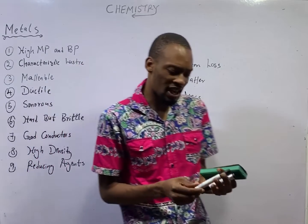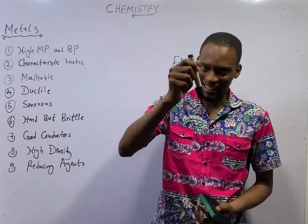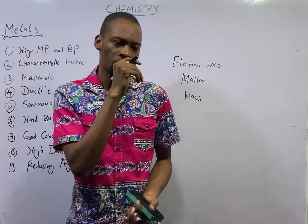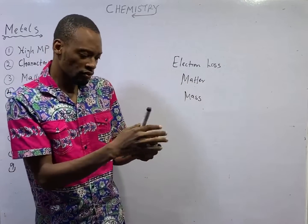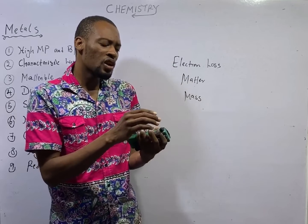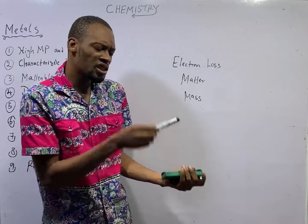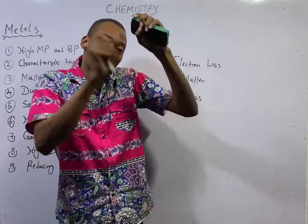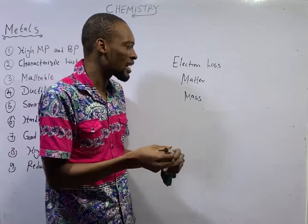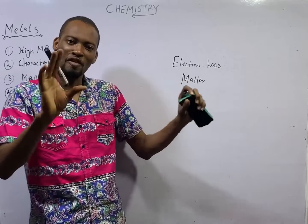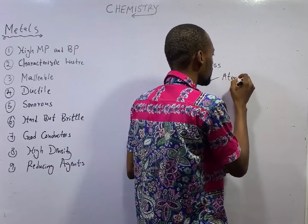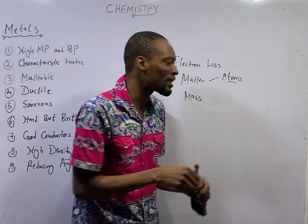An example of matter is this marker — it has mass and it occupies space. When you break it down and cut it until you get to the smallest unit, the smallest particle of this marker is referred to as an atom, which is the composition of matter. Matter is composed of atoms, so the atom is the unit of matter.